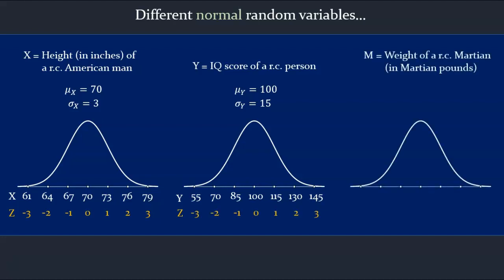And we'll look at one more normal random variable. Let m be the weight of a randomly chosen Martian, in Martian pounds, of course. These weights are normally distributed, and as you probably know, the mean Martian weight is 42 pounds, with a standard deviation of 7 pounds. Once again, our labels beneath the bell could be expressed in terms of the raw m-scores, or the corresponding standard scores, the z-scores.